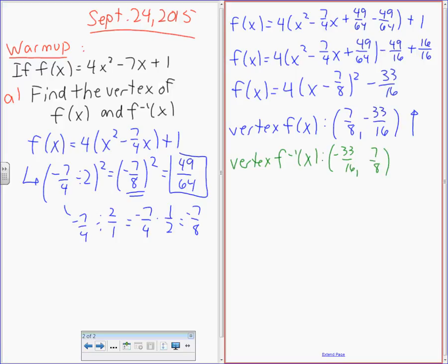The vertex of the inverse is going to be negative 33 over 16 and 7 over 8. Someone tell me which way it's going to open. If the original function opens upwards, in which way is the inverse going to open? To the right. If you can't remember, I'll show you on the graph why that is. You can just say it's like hands of a clock, right? Up goes to right, and then down goes to left. So you can think like it's going in a circle of a clock if that will help you remember.